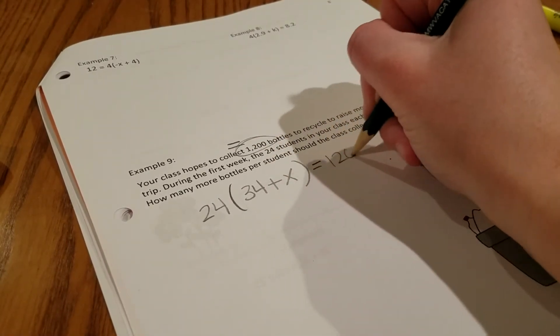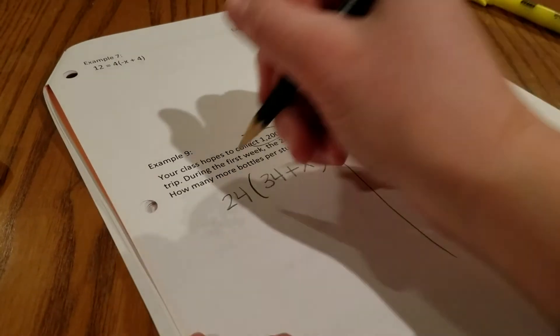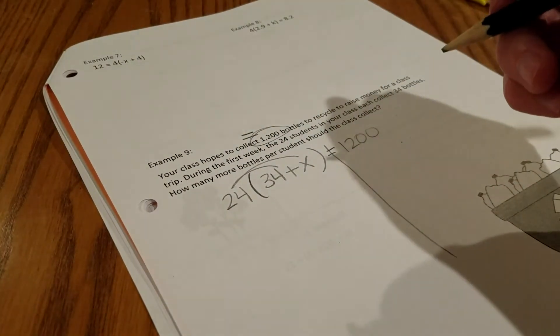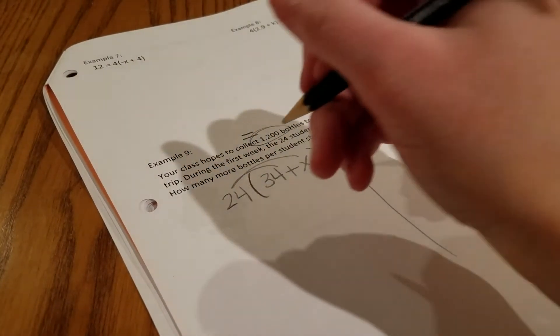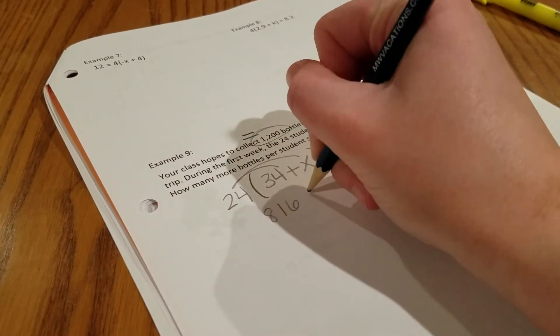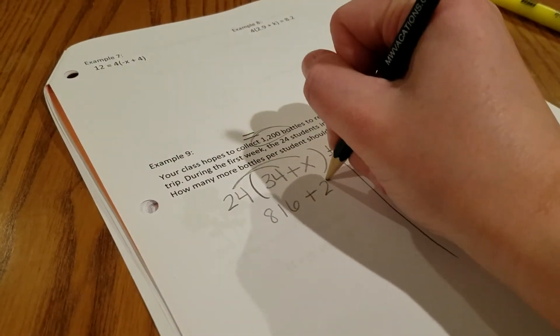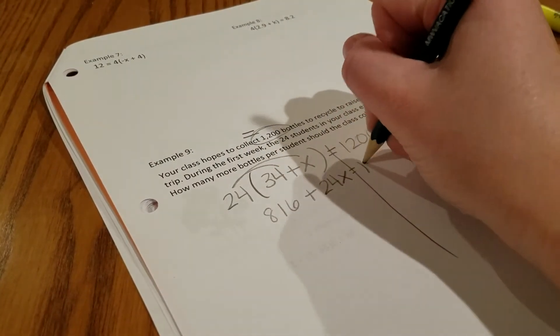So we go ahead and distribute. 24 times 34 gives us 816, plus 24x, equals 1,200.